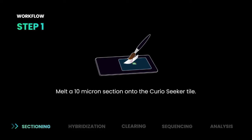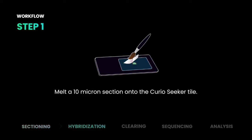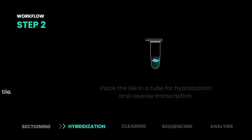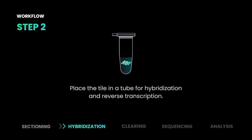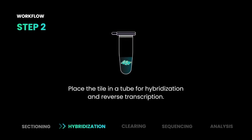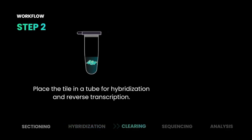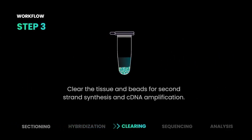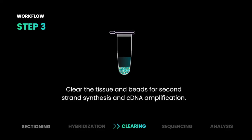Simply mount your 10-micron tissue on the seeker tile. Place your tile in a tube to hybridize and reverse transcribe the RNA. Digest the tissue before taking the beads through second strand synthesis and cDNA amplification.